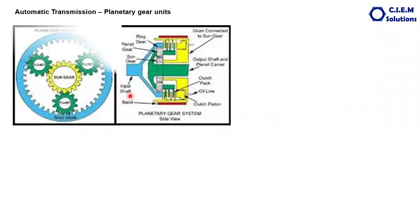Hi friends, in the previous video we talked about the basic functioning of the automatic transmission. Now onwards, we will discuss each and every individual component and how it works in an automatic transmission. To start with this video, I will be explaining the functioning of the planetary gear system, or the epicyclic gear system, which are the critical components. We will talk exclusively on the planetary gears, because knowing about them in detail is very important in understanding the working of any automatic transmission.